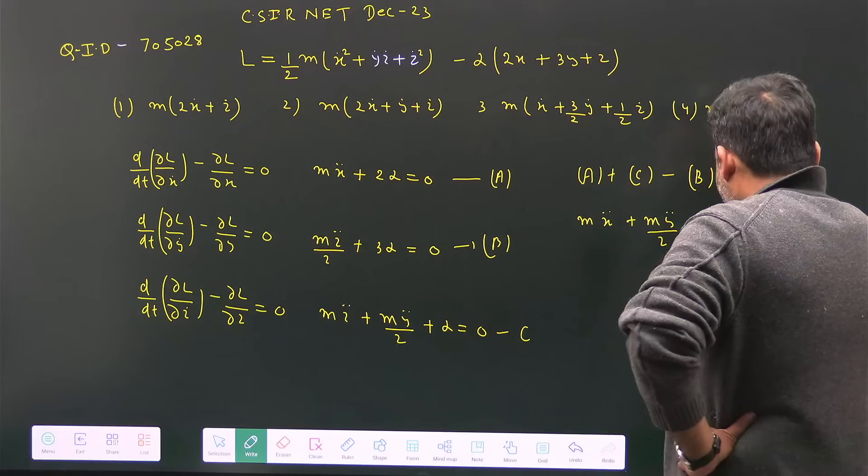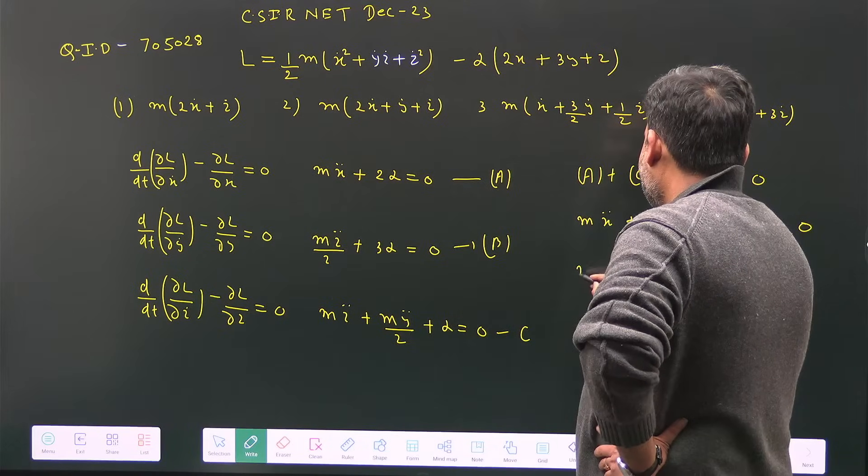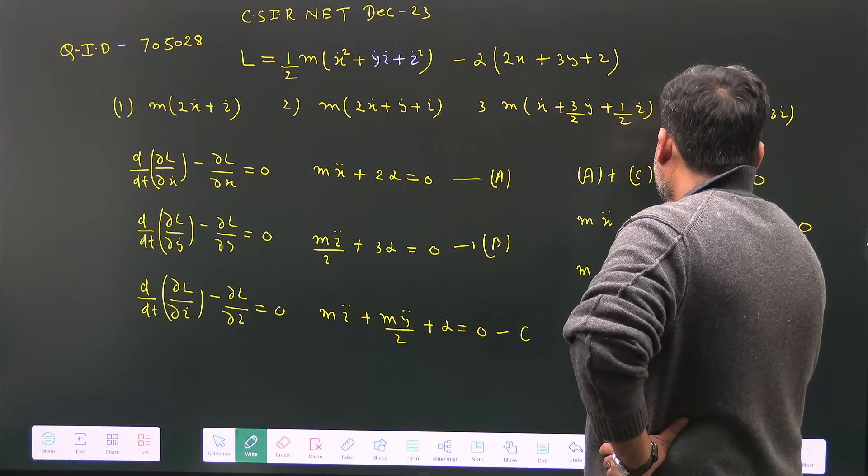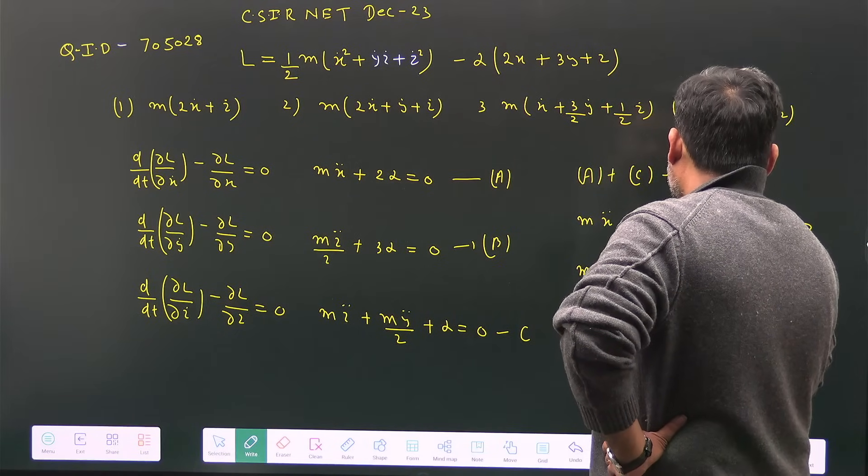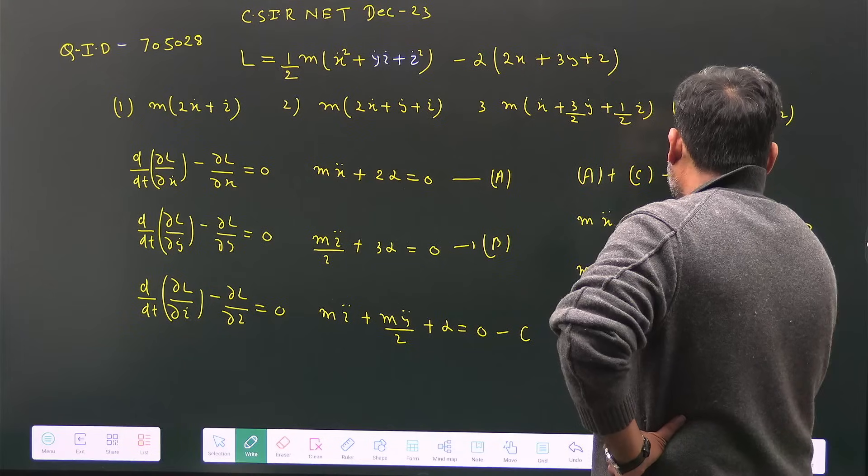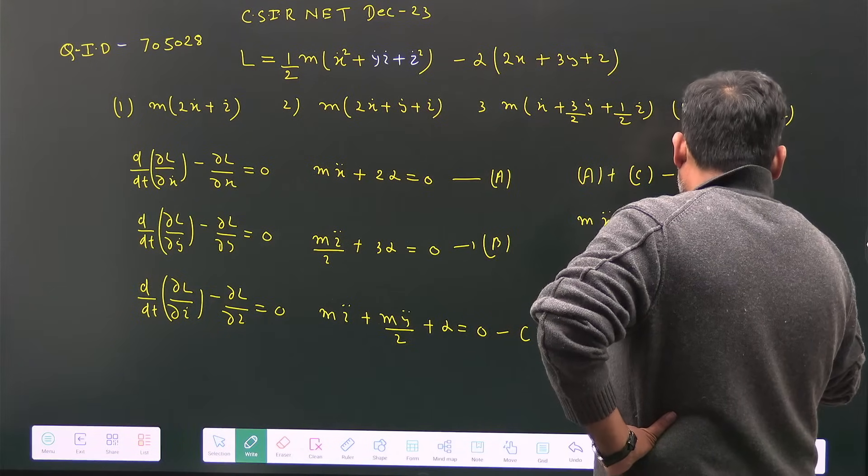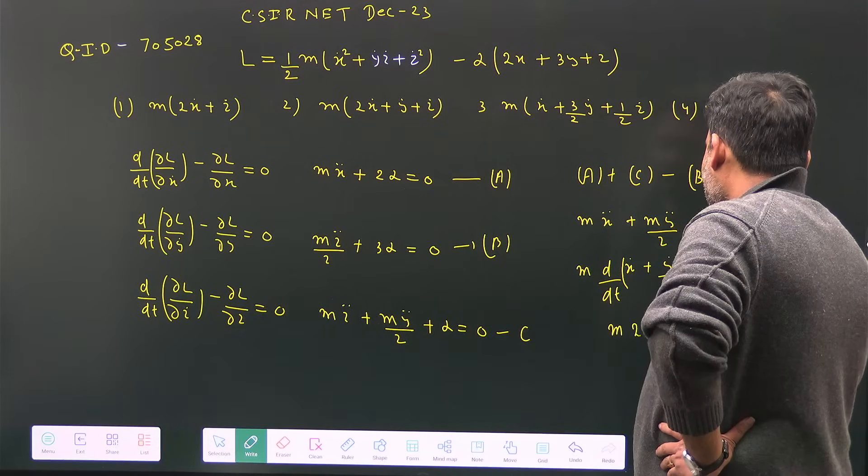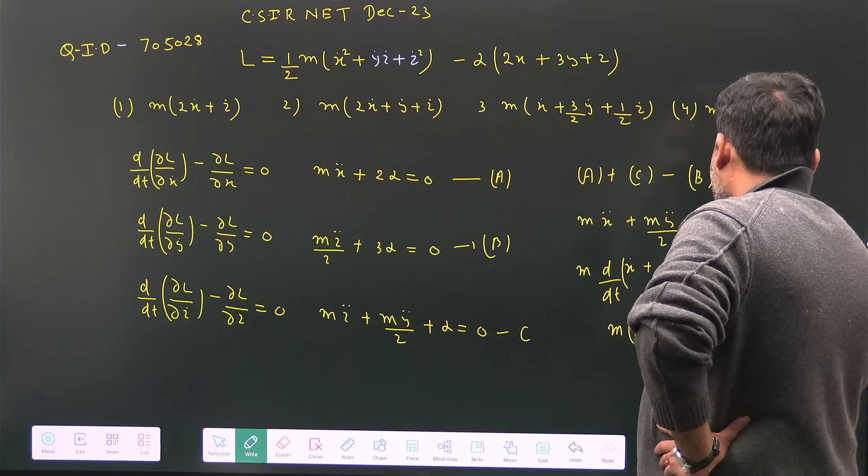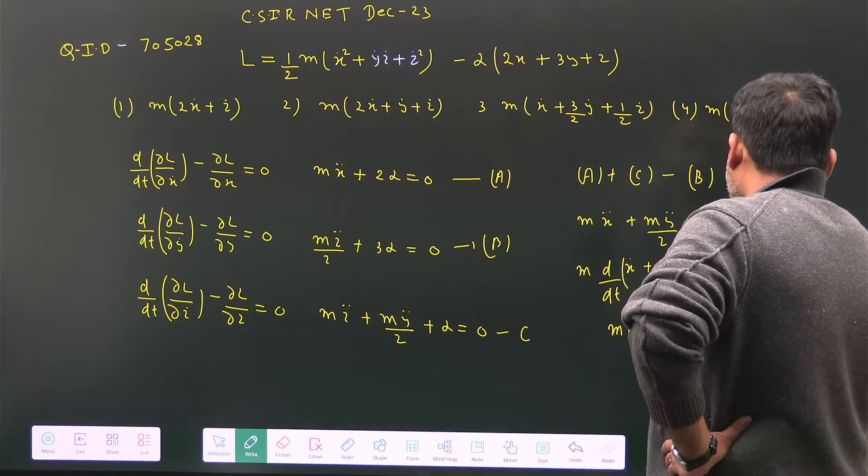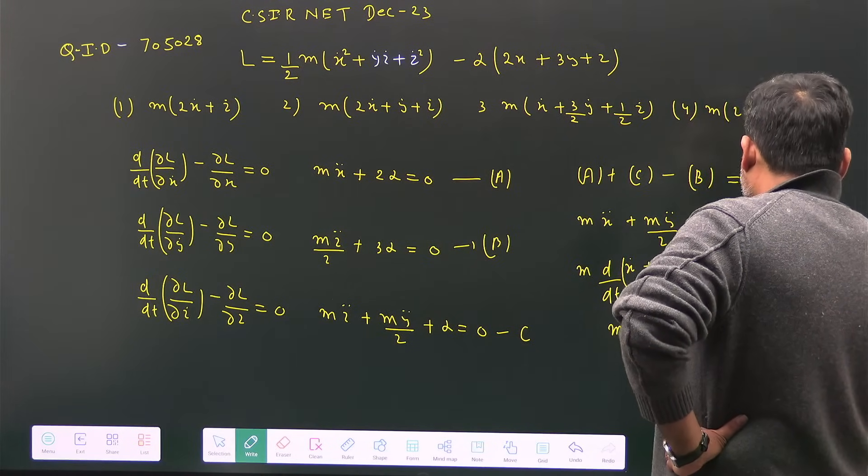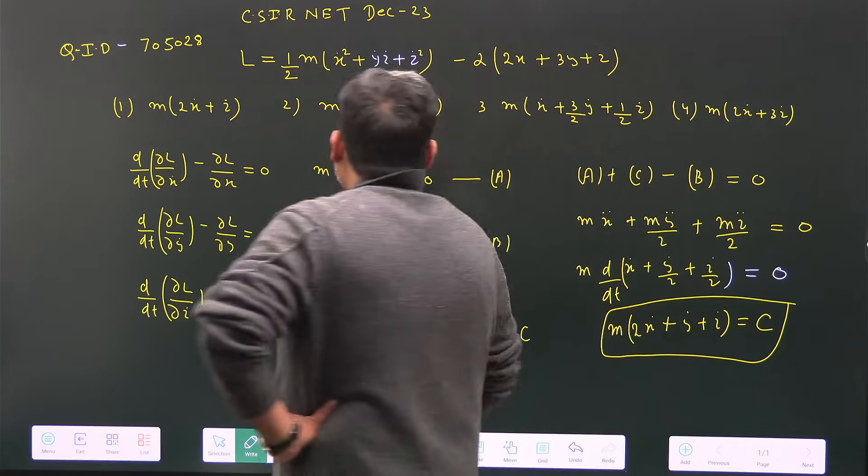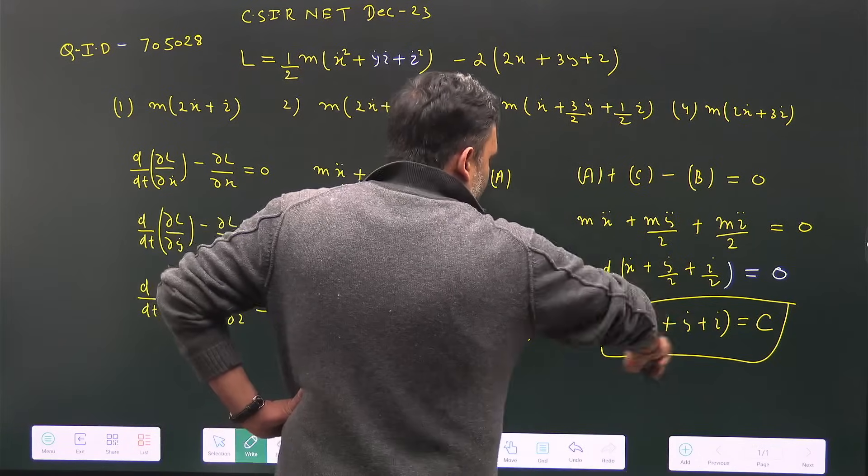I can write this as m(d/dt)(ẋ + ẏ/2 + ż/2) = 0. From there we can easily say that m(2ẋ + ẏ + ż) = constant. We can identify one particular thing that is going to be constant: this value. So option number 2 is the correct answer.